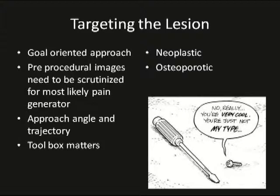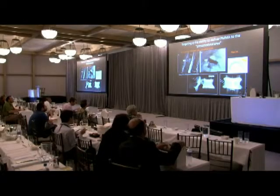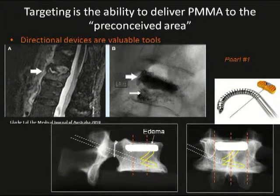Your approach and angle of trajectory is important, and in each case different depending on where the lesion is — superior end plate, inferior end plate, left, right, posterior or anterior. As you can see from the picture here, a Phillips head and a flathead clearly don't interact well. Pearl number one is that directional devices are very valuable. Having different tools in your toolbox helps treat certain diseases easier. I use one pedicle in almost every case, so having curved devices or osteotomes to reach superior and inferior bone marrow edema through one needle is very helpful. Understanding what's available from the different companies out there is extremely valuable.